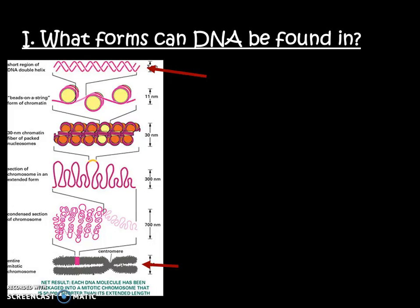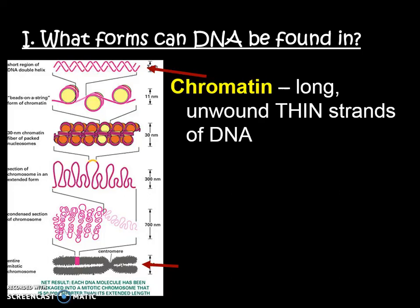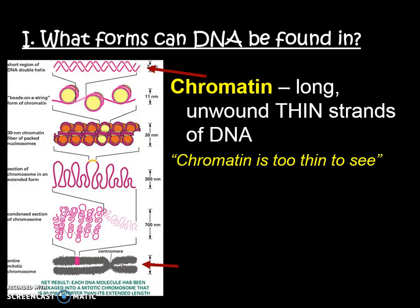Before we jump in, we have to understand a little bit about DNA. On your notes, there's a chart. We're going to be filling in a lot of vocab words and memory tools in that chart. The first word is chromatin. Chromatin is the type of DNA that's long and unwound and thin. We usually can't see it so well because it's so thin. Our saying is chromatin is too thin to see — it's not even visible under a microscope.